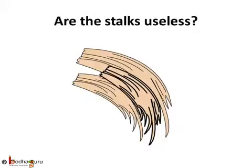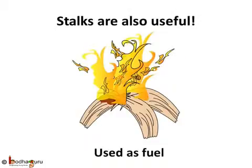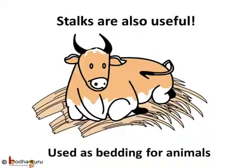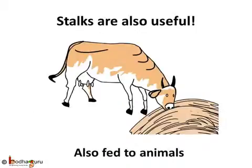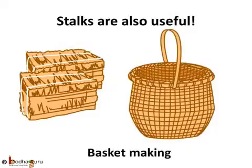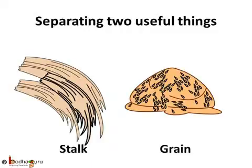But what do the farmers do with the stalk — do they throw it away? No, it is also useful. The stalk has many uses: it can be used as fuel, as bedding for animals, it is also fed to animals in small quantities, and it is used in basket making. So we see separation can also be used to separate two useful things. Separation was done here because the stalk and the rice grains are used for different purposes, so they have to be separated.